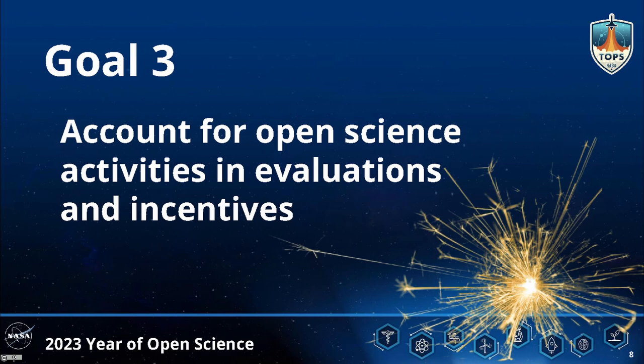Goal three — including open science in evaluations and incentives — is designed to shift the metrics by which success is measured, addressing the lack of career incentives that currently recognize open science activities. Evaluations could include awards, practices, career performance plans, and hiring practices. Many studies show that open science activities such as sharing data and citable software increase citations, the primary metric used to assess an individual's merit. We want to provide more immediate incentives to scientists who adopt open science practices.